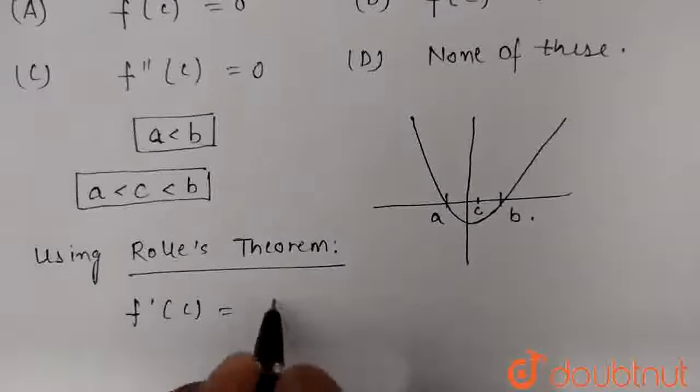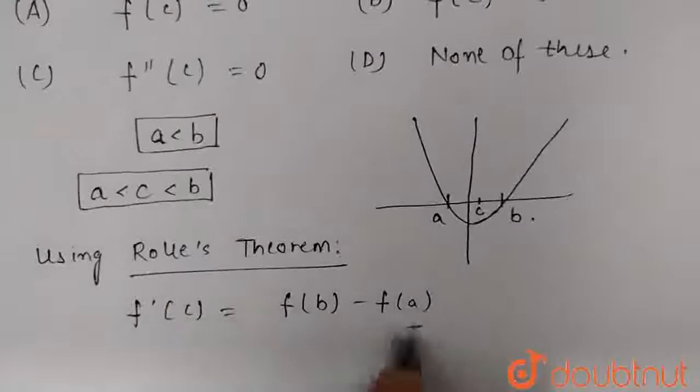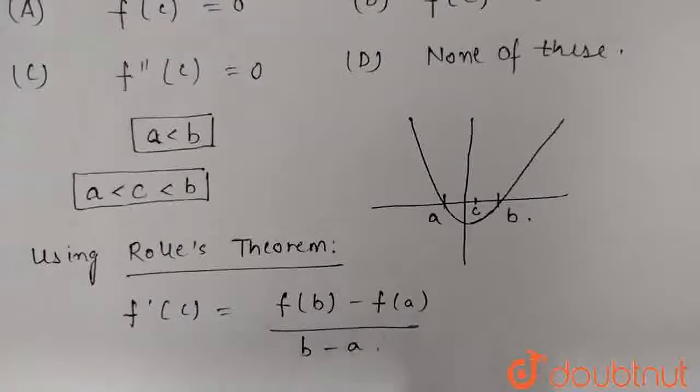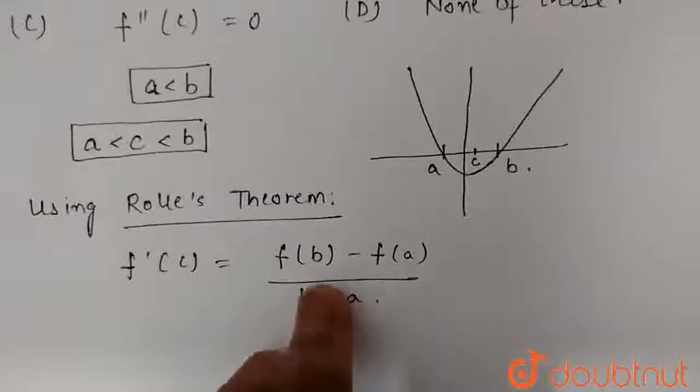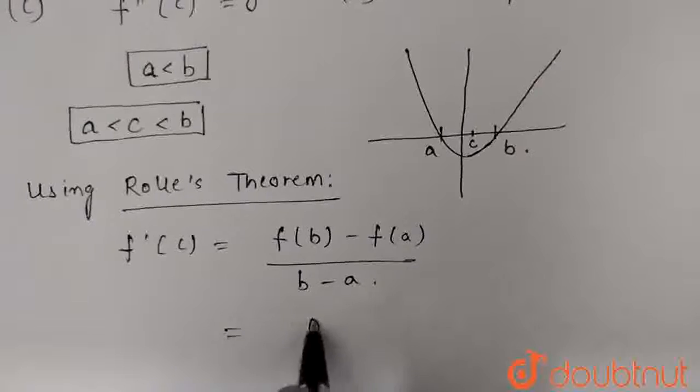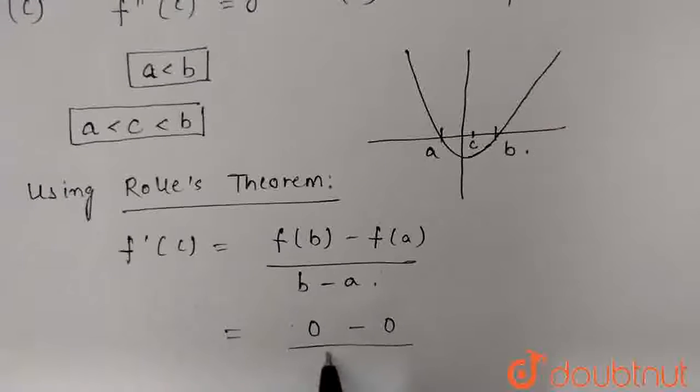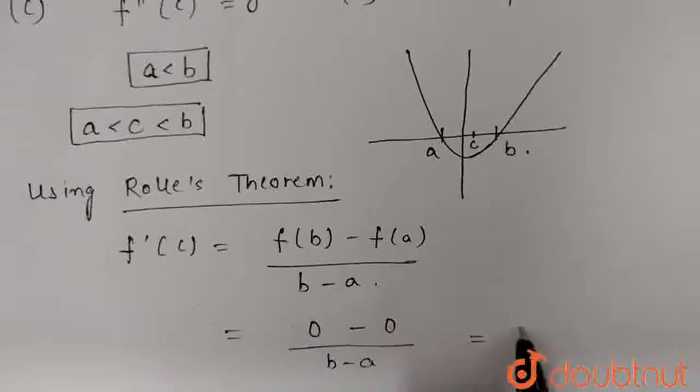f'(c) is equal to f(b) minus f(a) divided by b minus a. So here, b and a are roots of the equation. So we get f(b) is equal to 0 and f(a) is also equal to 0 divided by b minus a which is equal to 0.